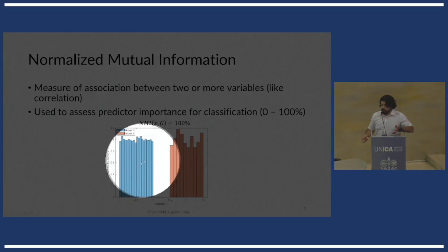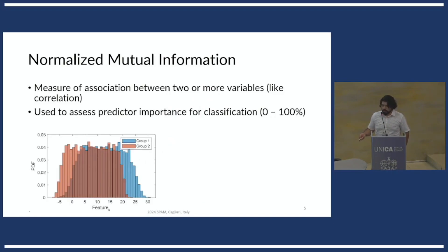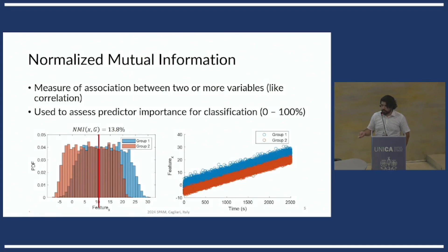This is a variable where we get a distribution for group one in blue and group two in orange. Because there's a perfect association of 100%, this is a very separable problem. However, when there's some overlap, we're going to have a reduced level of information, which in this case was 14%. But this is just looking at the variable from one angle. What happens when the variable is evolving with respect to another variable? If we were to plot this particular — again, these are synthetic variables — if we were to plot this particular variable with respect to time, we would see that maybe this variable was separable given a time-varying decision rule, and in this case the level of information is increased.